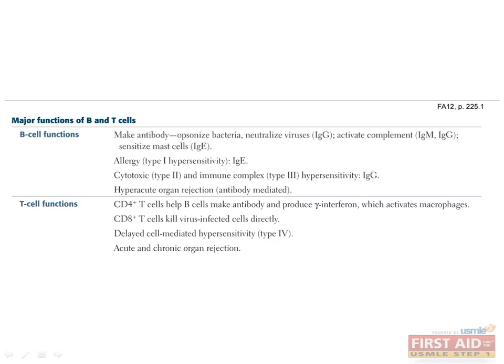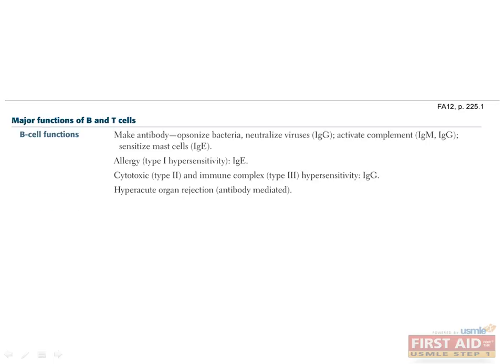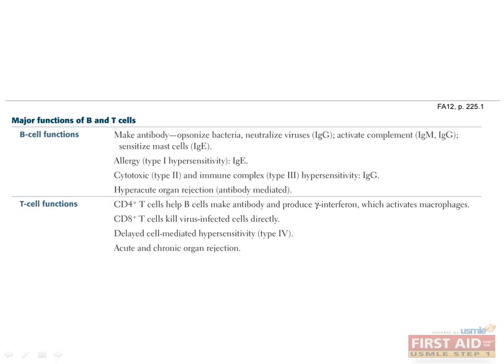Knowing the major functions of B and T cells will make your understanding of the adaptive immune system much more fluid. When you hear antibody, think B cells. This cell line is involved in producing antibody and mediating allergy, cytotoxic and immune complex hypersensitivity, and hyperacute organ rejection. We will hold our discussion of B cells until later, focusing now on T cell differentiation, activation, and function.